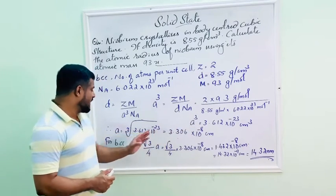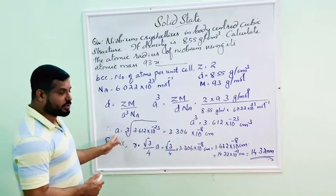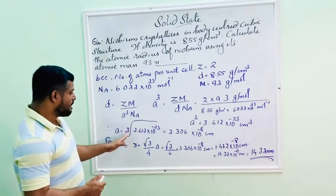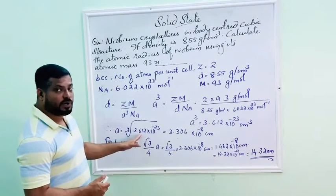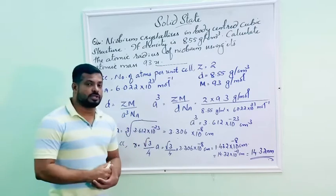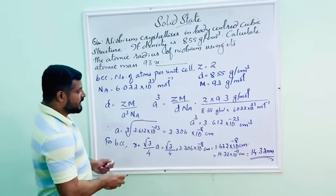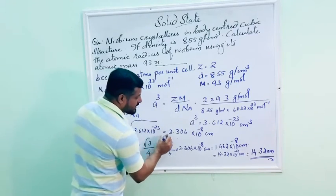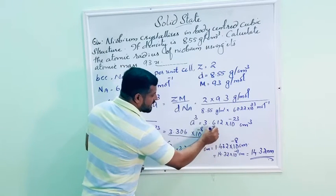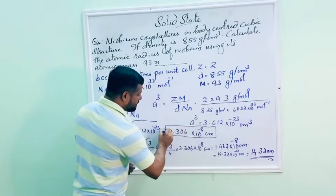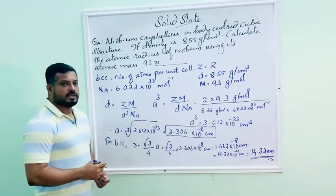We need the value of A. Therefore, edge length A equals cube root of 3.612 into 10 raise to 23. So, the value becomes 3.306 into 10 raise to minus 8. This is the value of A.